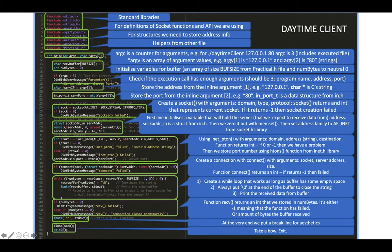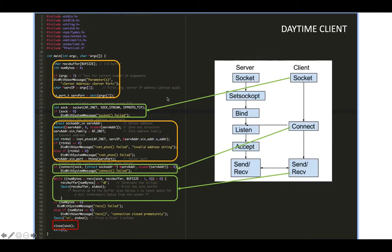Some of it is a reminder of what argc and argv values are. For example, if you compile your daytime client and run it with dot-slash, that's the first argument, the second argument, and the third argument. So the index of the first is zero, the second is one, and the third is two - that's why you see one and two referenced in the code.